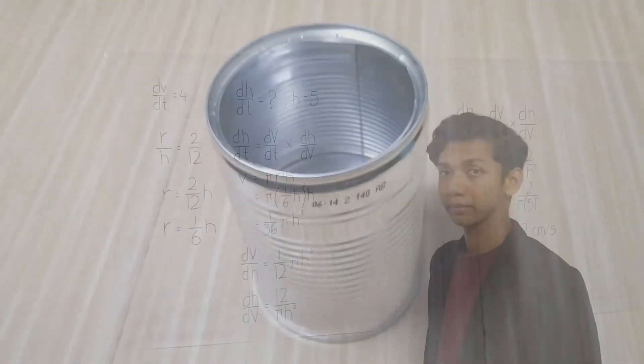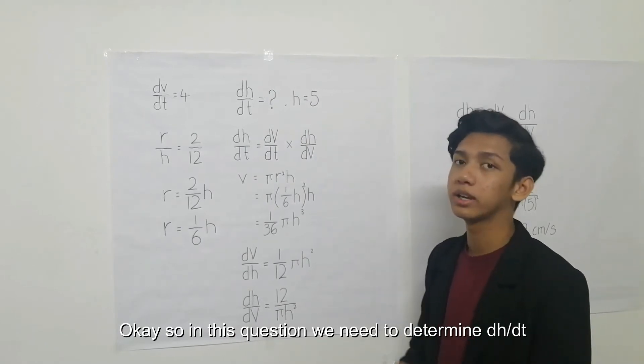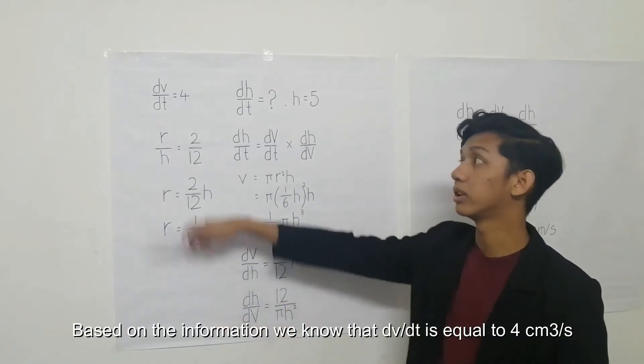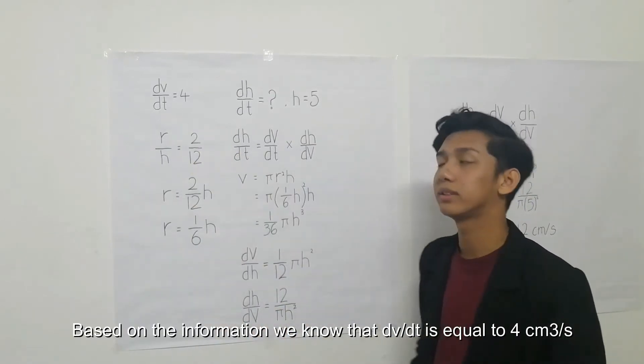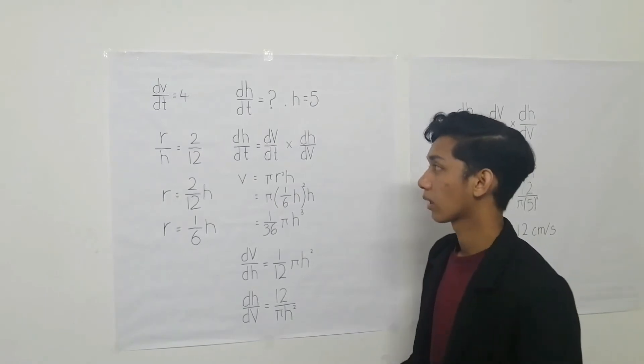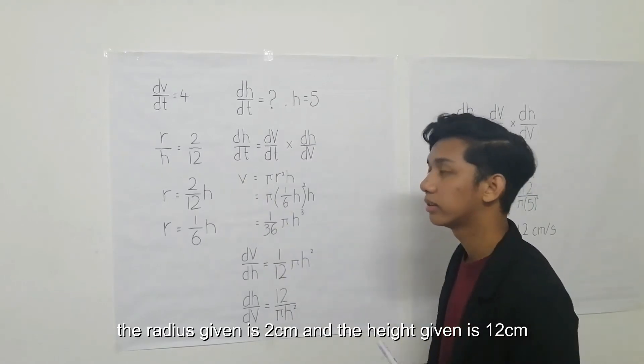Okay, so in this question, we need to determine dh/dt when the height given is 5 cm. Based on the information, we know that dV/dt is equal to 4 cm³ per second. The radius given is 2 cm and the height given is 12 cm.